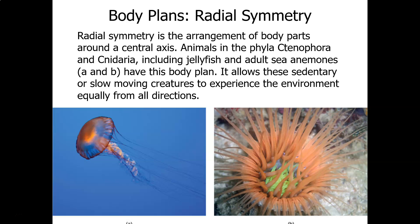Now we move into the eumetazoa, which are divided into the radiata — those with radial symmetry — and those with bilateral symmetry. Animals with radial symmetry can be cut in several different directions and still produce two equal halves, like a jellyfish or a sea anemone. The cnidaria include jellyfish, sea anemones, and coral.